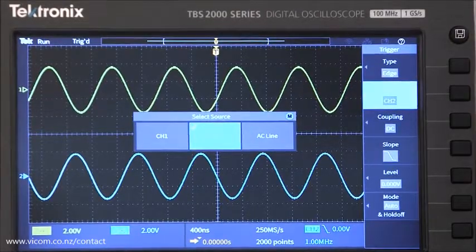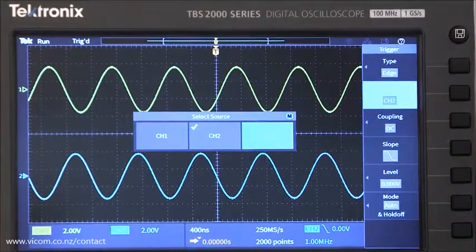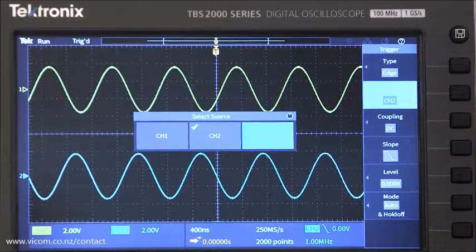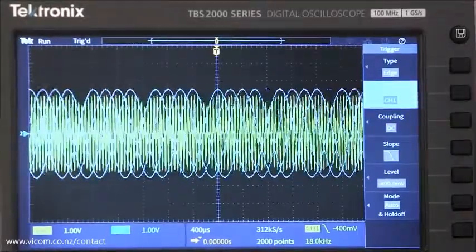The AC power line can also be used to sync up the scope. This is useful when you're working on power supplies or looking for power line noise in a circuit. Finding the right trigger source can be the key to analyzing complex signals.